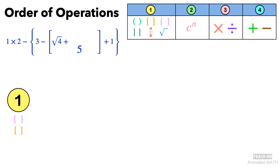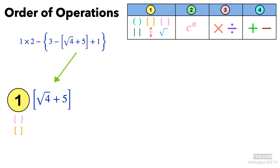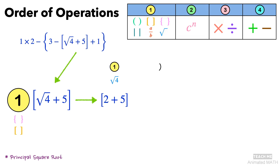Then we work our way outwards. Simplify the expression in the square brackets. First, we need to simplify the radical — the square root of 4. Steps 2 and 3 don't apply here, so we use Step 4 to simplify 2 plus 5. This gives us the value of 7.